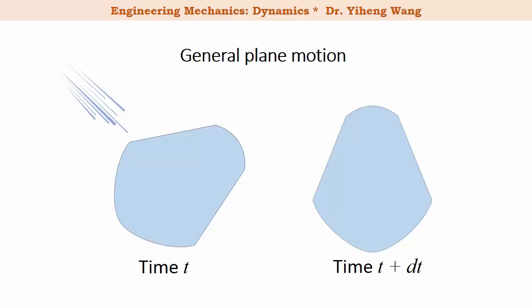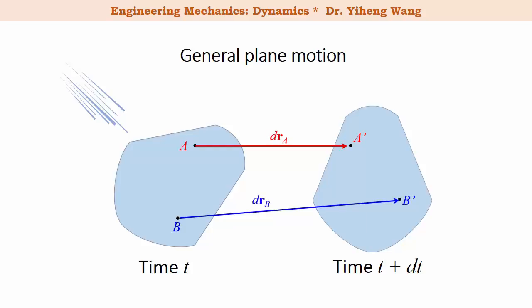To study the general plane motion, let's focus on the motion of two arbitrary particles in this rigid body — particle A and particle B — which have moved into these two new locations. During motion, the displacement of particle A is vector drA, and the displacement of particle B is vector drB. The initial relative position of particle B relative to A is rB/A, and after the motion the relative position is rB/A prime.